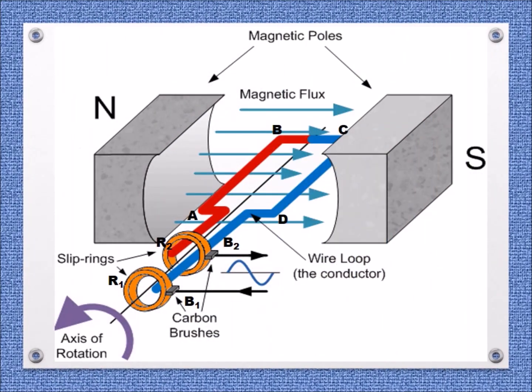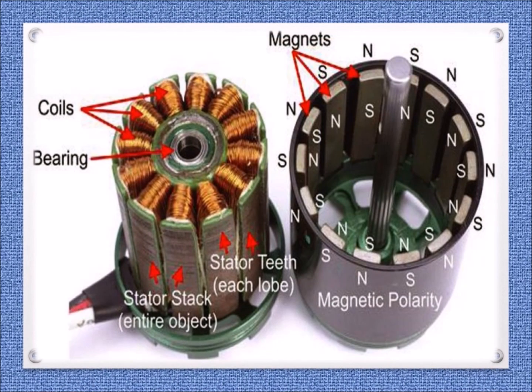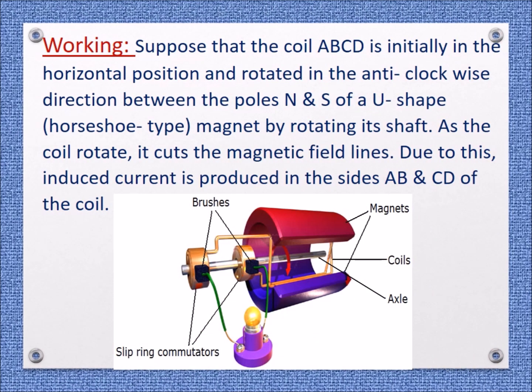The coil is located in the horizontal position and rotated in the anti-clockwise direction between the poles N and S of a horseshoe-type magnet by rotating its shaft. As the coil rotates, it cuts the magnetic field lines.